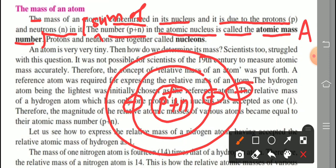The next question asked is: define nucleons. Nucleons means the subatomic particles present in the nucleus — that is, protons and neutrons. Both these subatomic particles are present in the nucleus and are commonly called nucleons. Definition: protons and neutrons are together called nucleons.